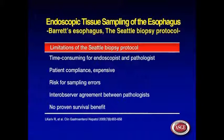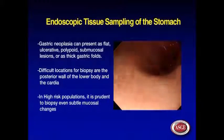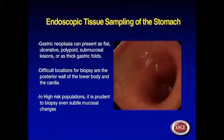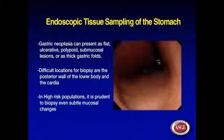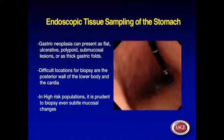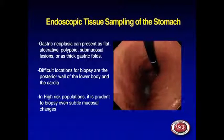High-grade dysplasia from intramucosal cancer. Gastric neoplasia can present as flat, ulcerative, polypoid, or as thick gastric folds.